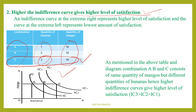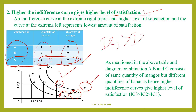Diagrammatically, you can see three indifference curves: IC3, IC2, and IC1. Combination C is on IC3. IC3 gives a higher level of satisfaction than IC2. IC2 gives a higher level of satisfaction than IC1. Higher the indifference curve, higher will be the level of satisfaction. Lower the indifference curve, lower will be the level of satisfaction.